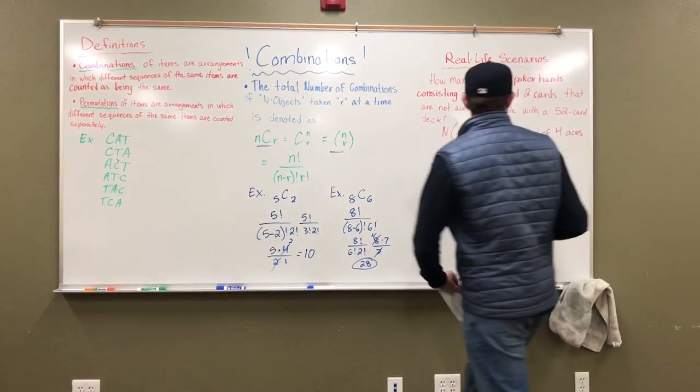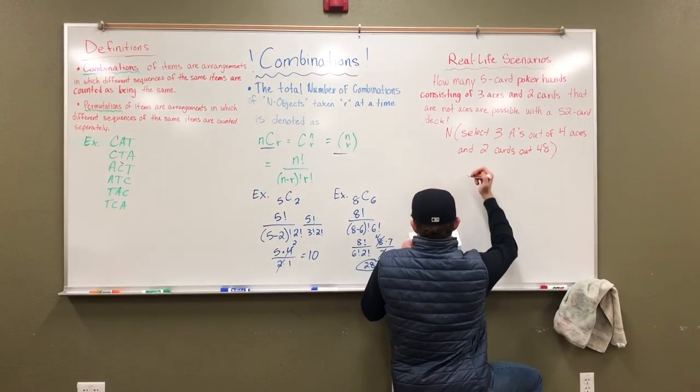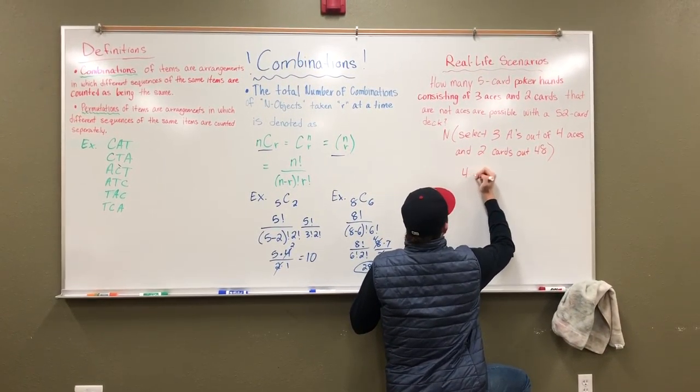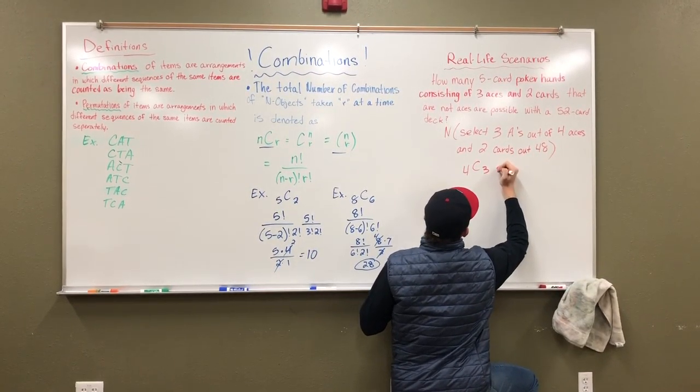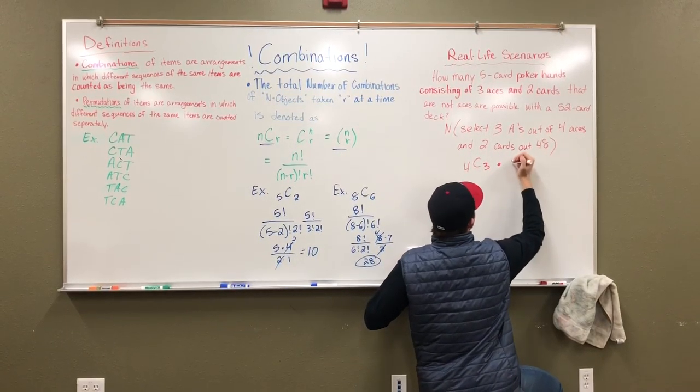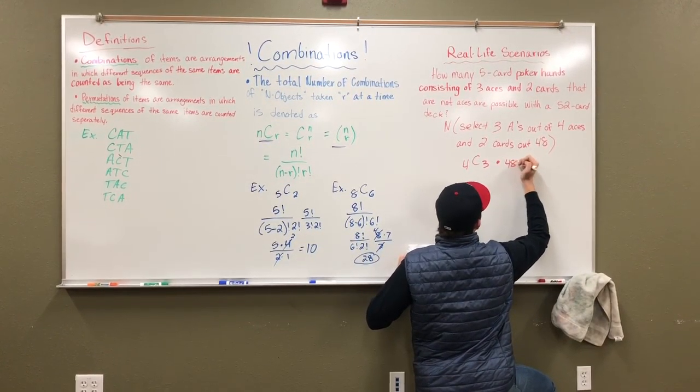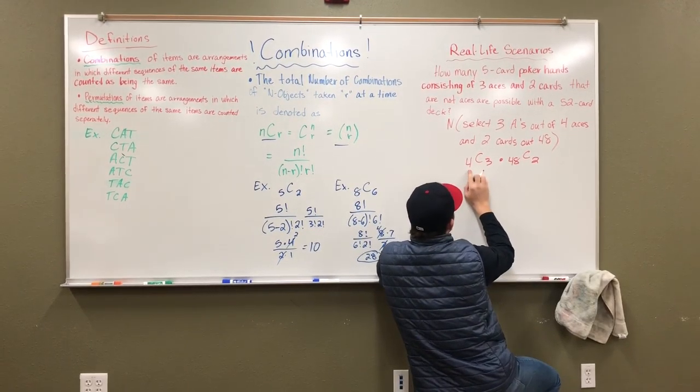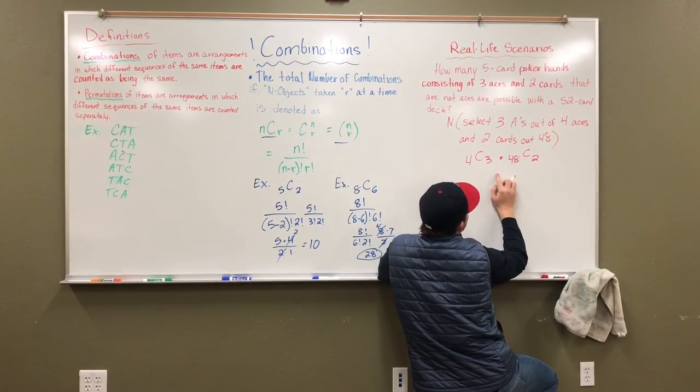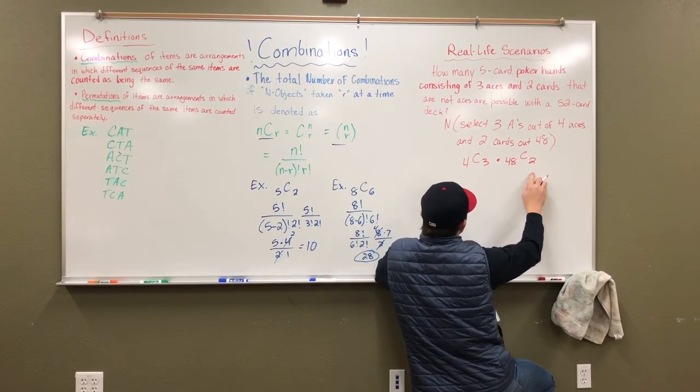So now looking at this, we understand that it is four choose three from this times 48 choose two. So we have four chances and we're choosing three and then we have 48 possibilities and we're choosing two.